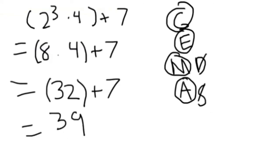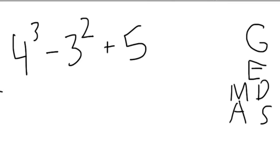The next problem, 4 cubed subtract 3 squared plus 5. Since there are no grouping symbols, you do the exponents first, otherwise the E in GEMDAS. 4 cubed equals 64. 3 squared equals 9.